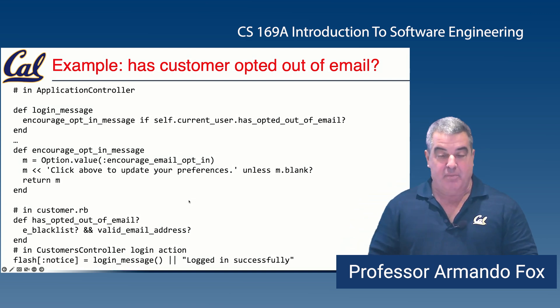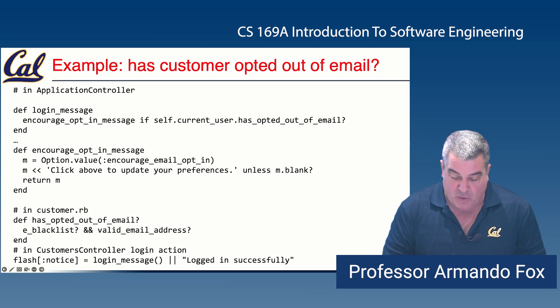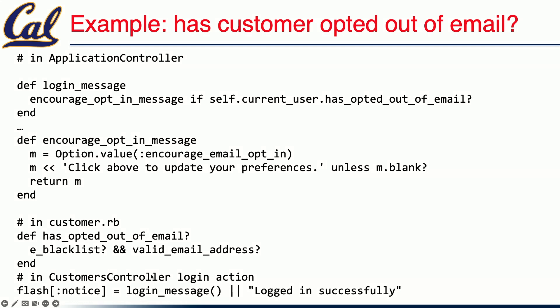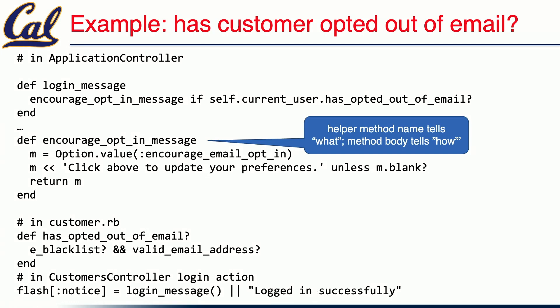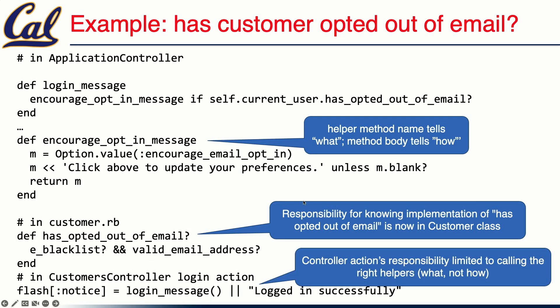And finally, how do we know if somebody has opted out of email? There's a customer model, and that model is the place where that information belongs. In the model, we can change the definition of what it means to have opted out, and the rest of the code path doesn't have to worry about that. Now the only thing we do in the customers controller is set flash notice to either the login message if there is one, or just a plain 'logged in successfully.' The helper method's name says what to do; the body tells how. Responsibilities have been moved to where they're more appropriate, and as a side effect your individual methods will more nicely follow the SOFA guidelines.